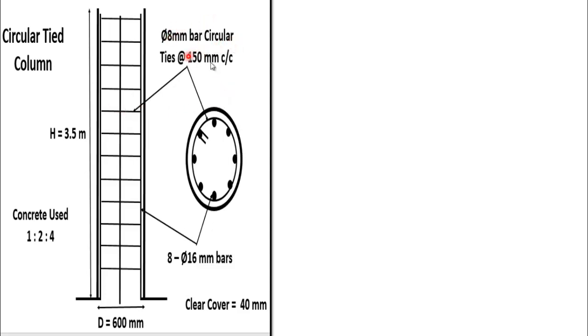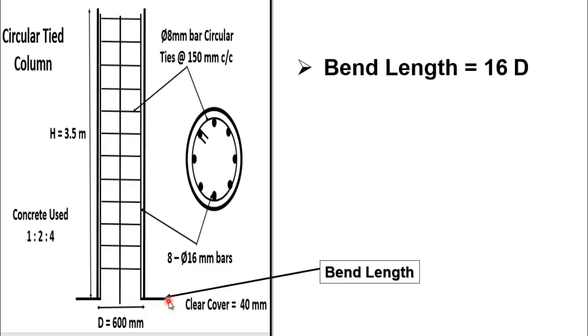Now we have to calculate the bend length of steel for this column. As discussed in the previous slide, bend length equals 16 multiplied by D. Here, the diameter of the steel bar used for longitudinal reinforcement is 16 millimeters.